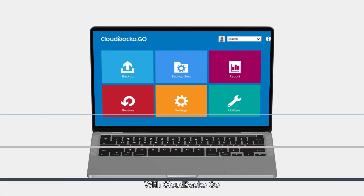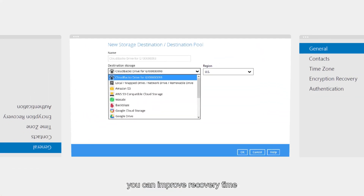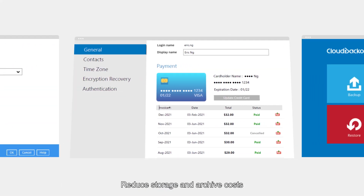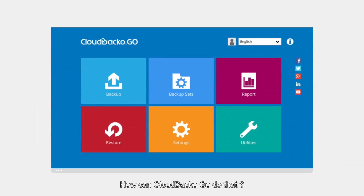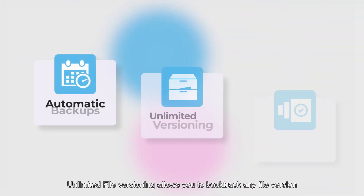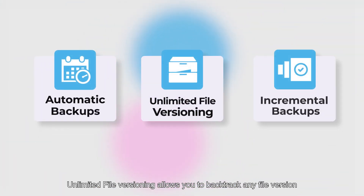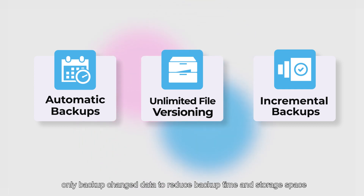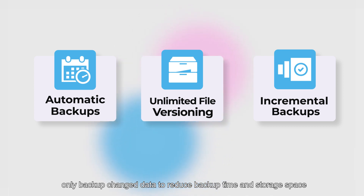With CloudBuckle Go, you can improve recovery time and reduce storage and archive costs. How? With automatic backups, unlimited file versioning allows you to backtrack to any file version, and incremental backups only back up changed data to reduce backup time and storage.